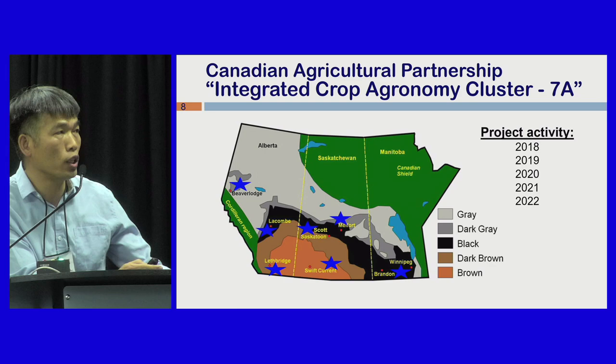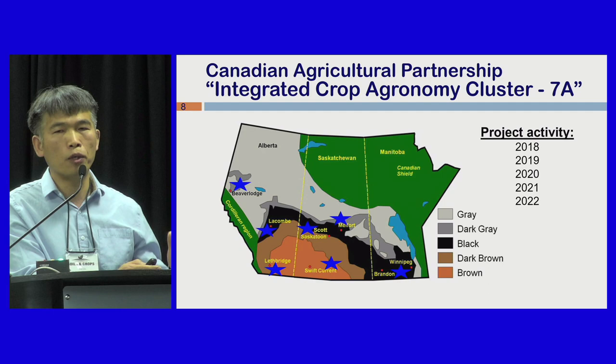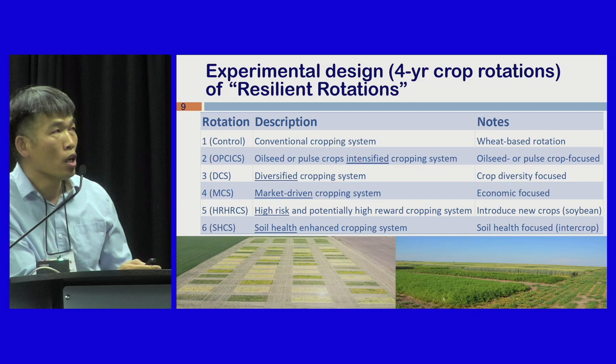This experiment was established in 2018 at seven sites — three in Alberta, three in Saskatchewan, and one in Manitoba. These seven sites are in different eco-zones, providing a good opportunity to assess G×E×M interactions through multiple years and multiple sites, and also to assess the resilience of Cropping Systems.